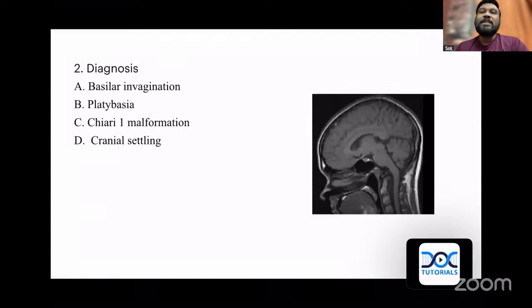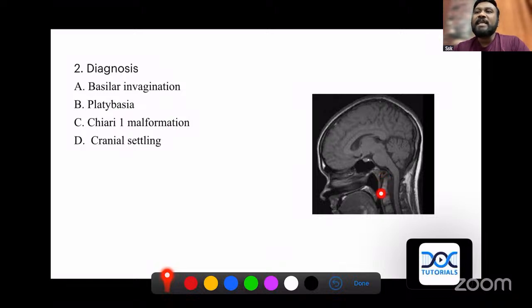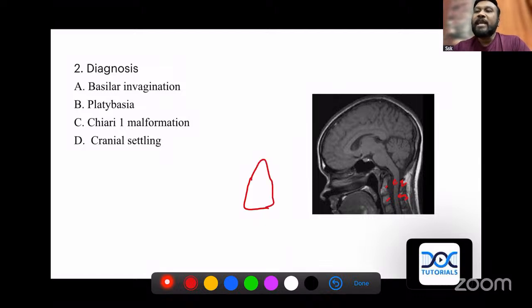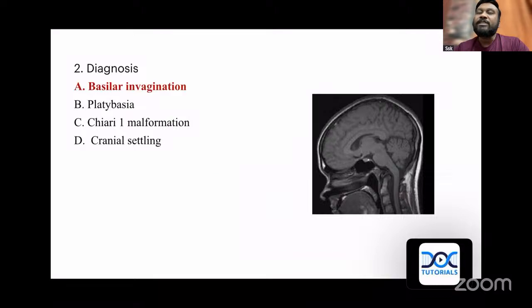The second question was an image-based question where an image was given and they asked the possible diagnosis. Option A: basilar invagination. Option B: platybasia. Option C: Chiari malformation. Option D: cranial settling. What has happened here is — this is C2, this is C3 — normally the shape of the odontoid process will be like this, but here the odontoid process has curved in and is impinging on the medulla. This is a characteristic case of basilar invagination.